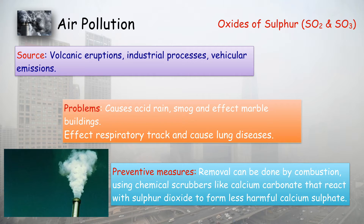Now, sulfur dioxide SO2 and sulfur trioxide SO3 are also pollutants. The major source is volcanoes — when volcanoes erupt they produce huge amounts of sulfur dioxide and sulfuric acid. Other sources include vehicular emissions and industries. Sulfur dioxide combines with water to form sulfuric acid, which is responsible for acid rain.